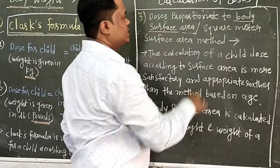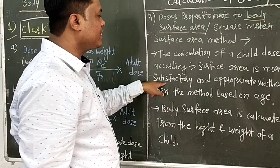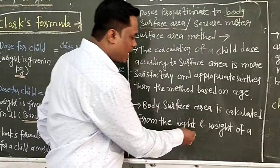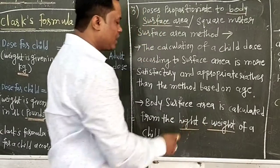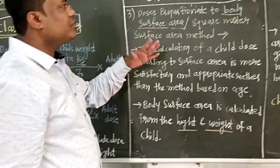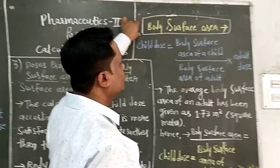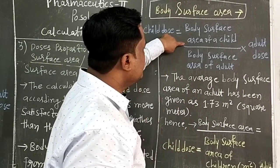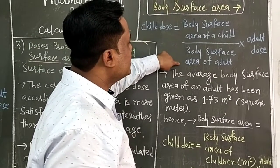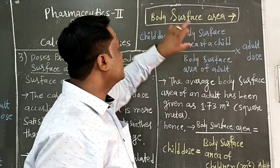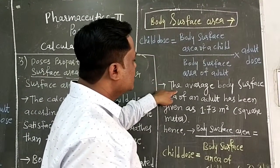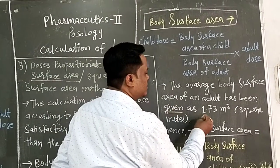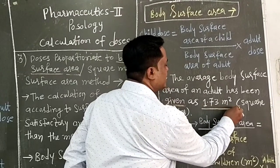The formula for the body surface area method is: Child's dose = (Body surface area of child) / (Body surface area of adult) × Adult dose. The average body surface area of an adult is given as 1.73 square meters.